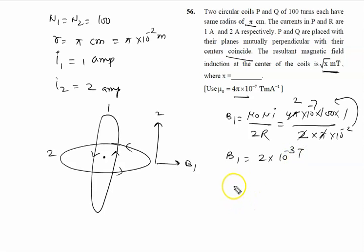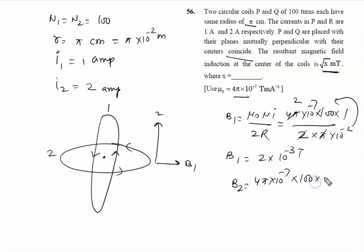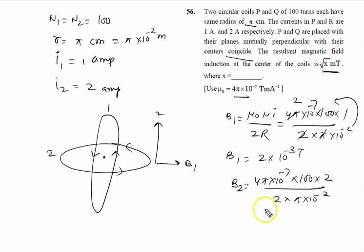Now we calculate B2 using the same formula μ₀NI upon 2R. μ₀ is 4π × 10⁻⁷, number of turns is the same 100, but current is double — 2 ampere — upon 2R, with radius also the same π × 10⁻². Since only the current is doubled, the resultant value doubles, giving B2 = 4 × 10⁻³ tesla.